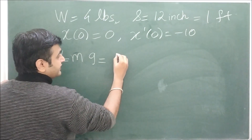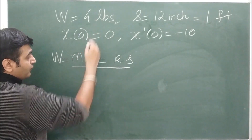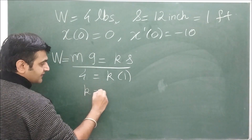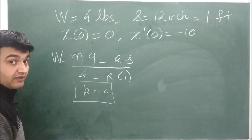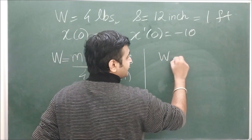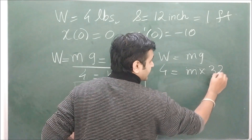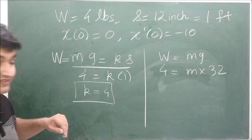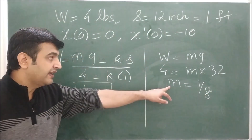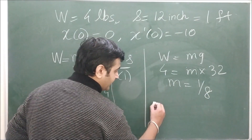From the equilibrium equation W = ks: 4 = k·1, so k = 4. To find mass: W = mg gives 4 = m·32 (using g = 32 ft/s² in the British system), so m = 1/8. Now substituting into m·x'' + kx = 0: (1/8)·x'' + 4·x = 0, which simplifies to x'' + 32·x = 0.